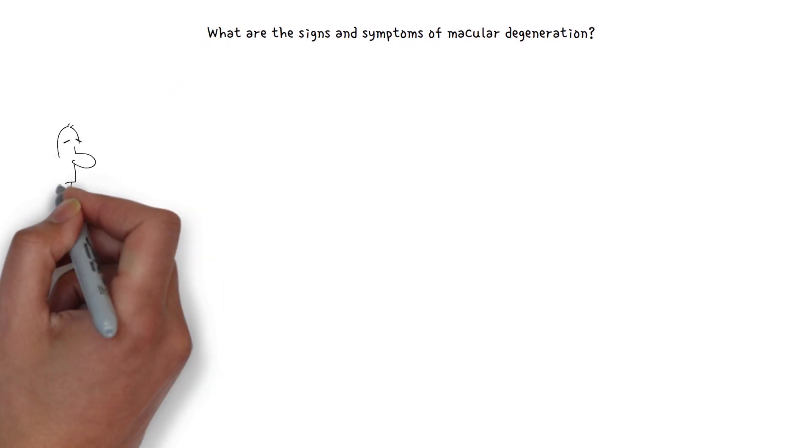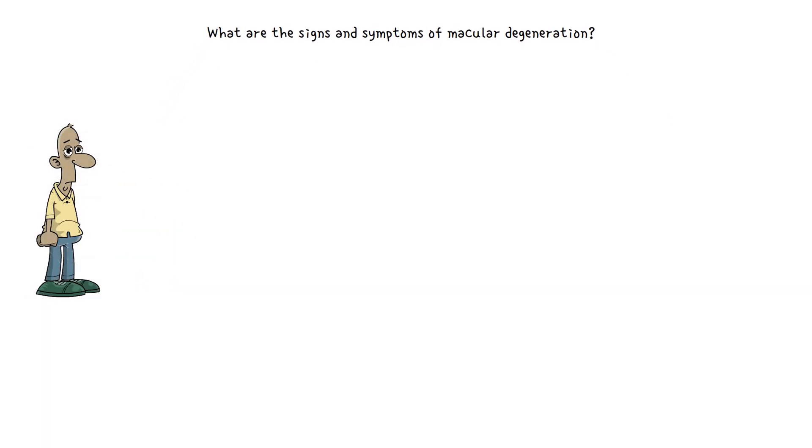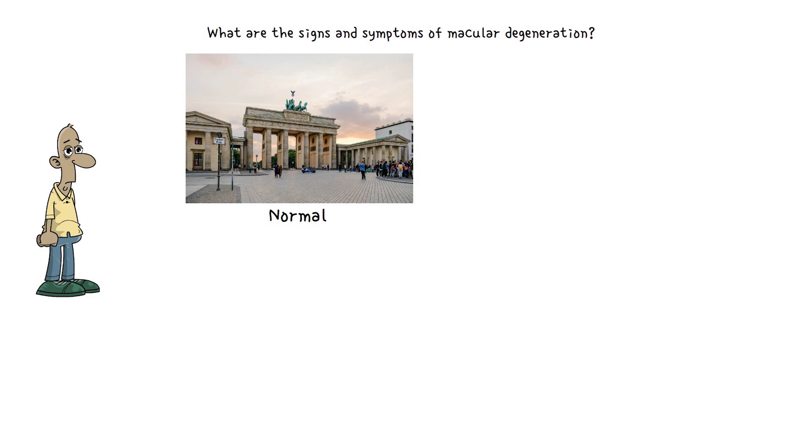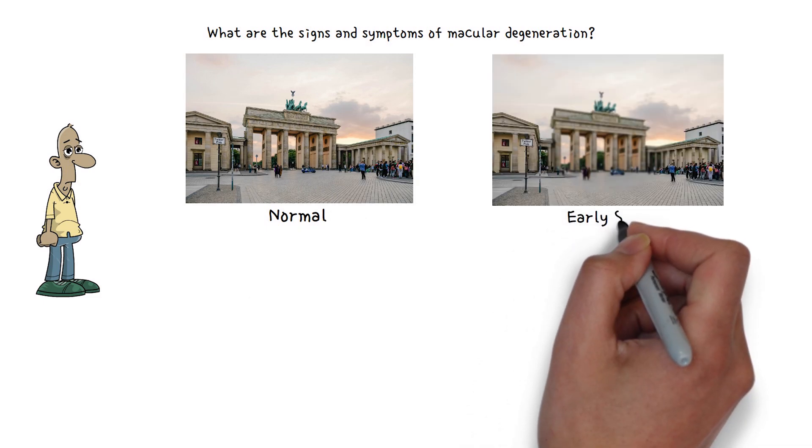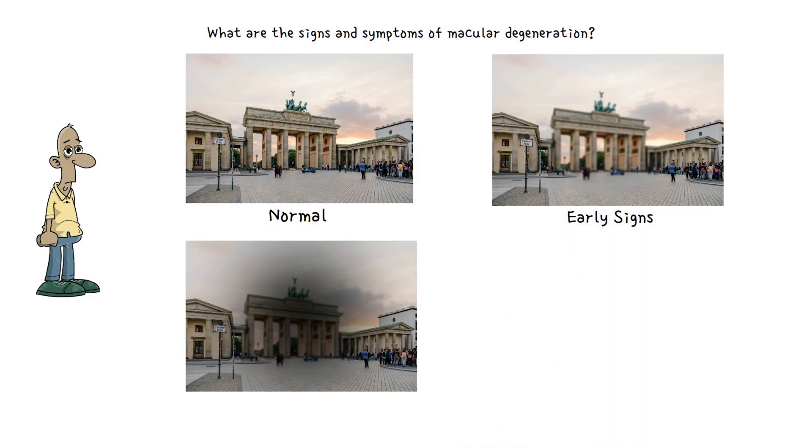Early on, there are often no symptoms. However, over time, some people experience a gradual worsening of vision that may affect one or both eyes.